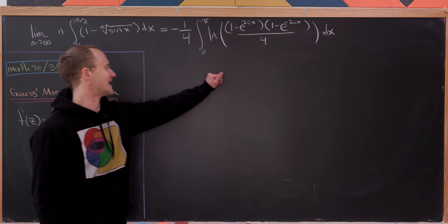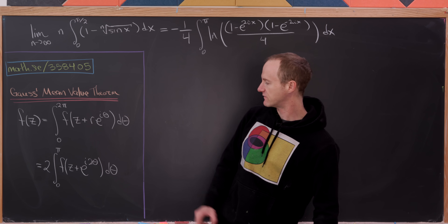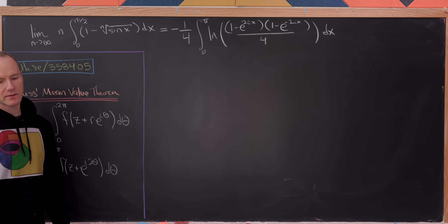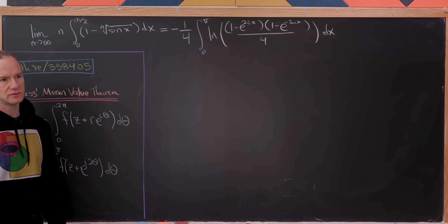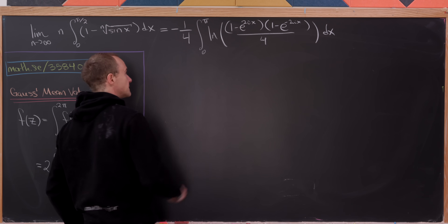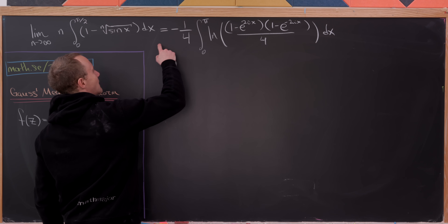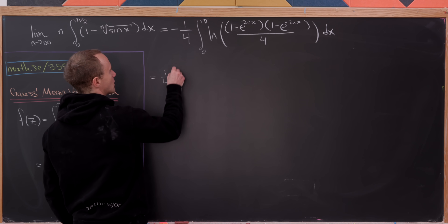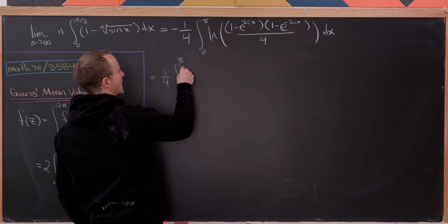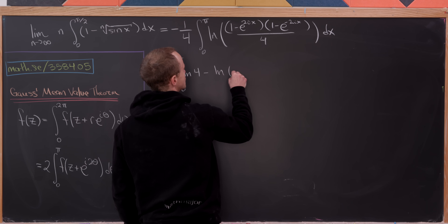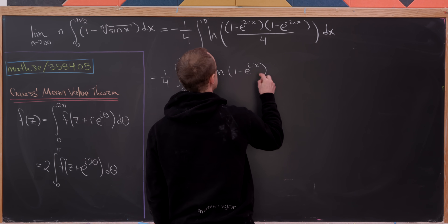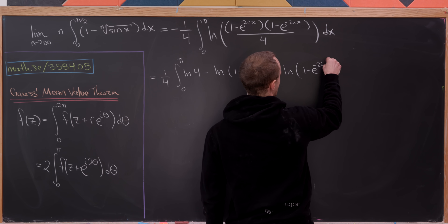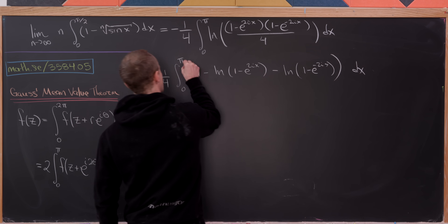Using logarithm rules to break apart the natural log of a product, and absorbing the minus sign to change the order of subtraction, we're left with 1/4 times the integral from 0 to π of: ln(4) minus ln(1 minus e^{2ix}) minus ln(1 minus e^{-2ix}) dx.